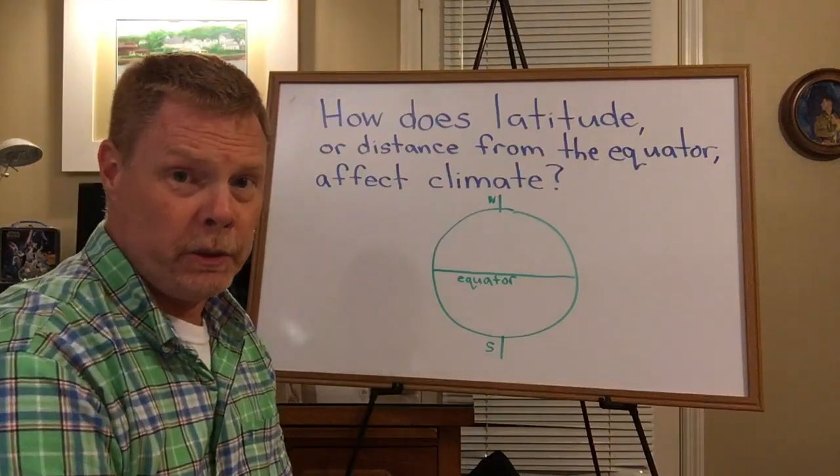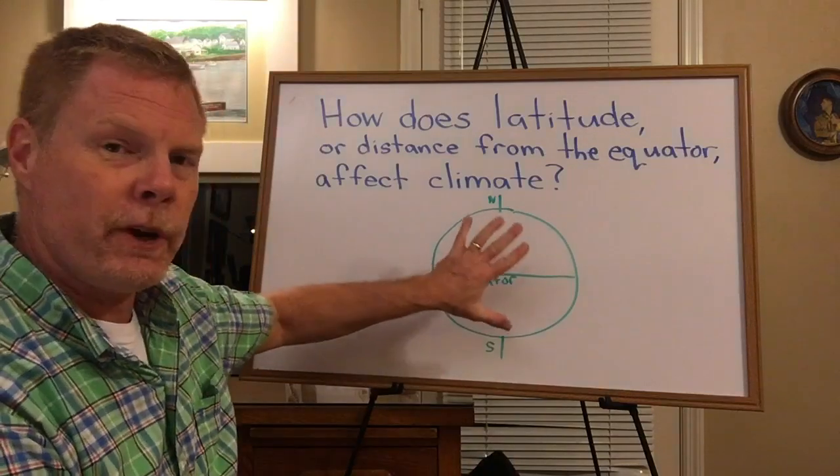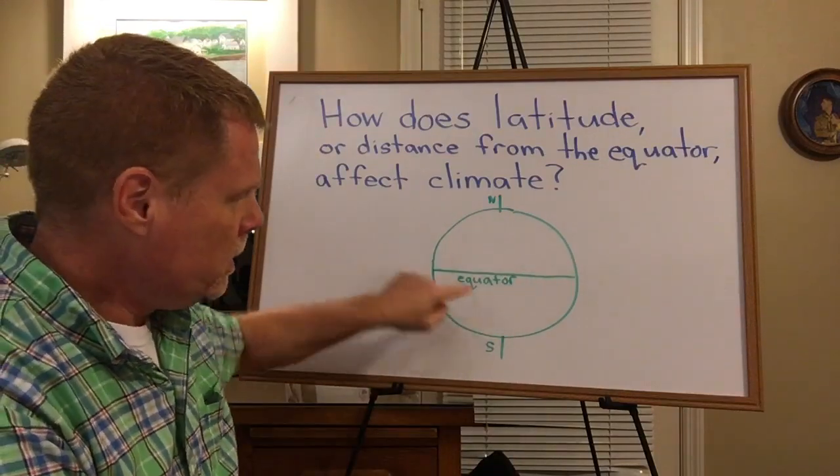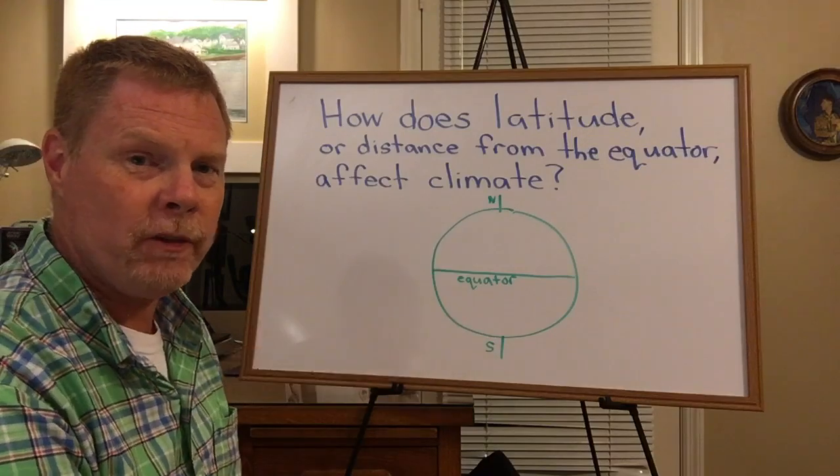So how does latitude or distance from the equator affect climate? Here's a very simple drawing of the earth. Here's the equator across the center line, the North Pole and the South Pole.